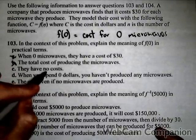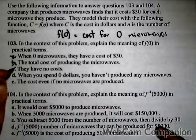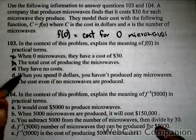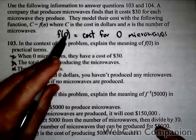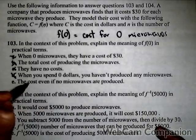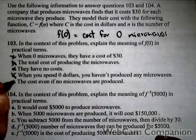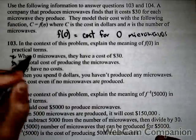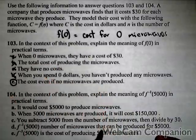'When you spend 0 dollars, you haven't produced any microwaves' - remember, the 0 we identified as the number of microwaves, not dollars. 'The cost even if no microwaves are produced' - that best matches our interpretation.